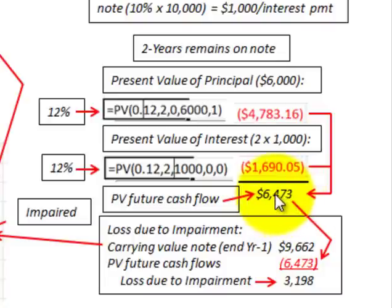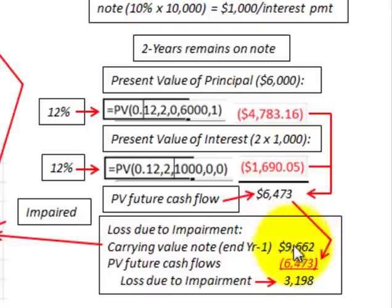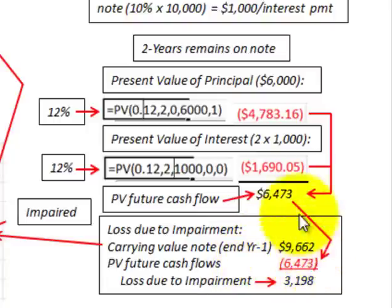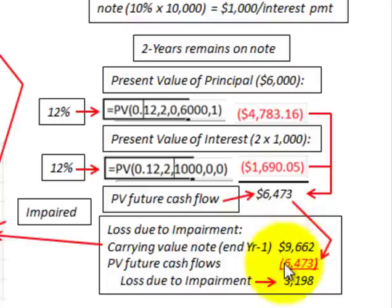That present value of $6,473 is what we use for our impairment loss calculation. We take our carrying value of the note at the end of year one — $9,662 from our amortization schedule — and subtract the present value of those future cash flows of $6,473. Taking the difference, $9,662 less $6,473, gives us a loss due to impairment of $3,198.